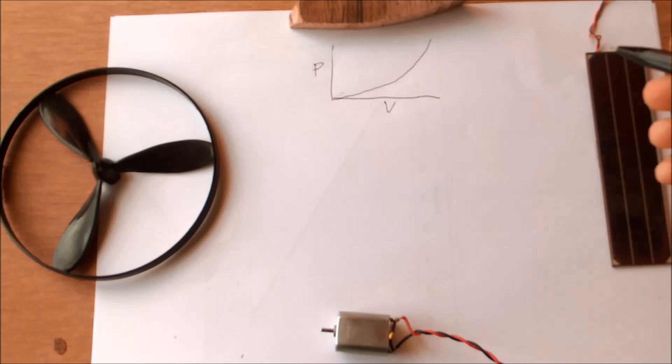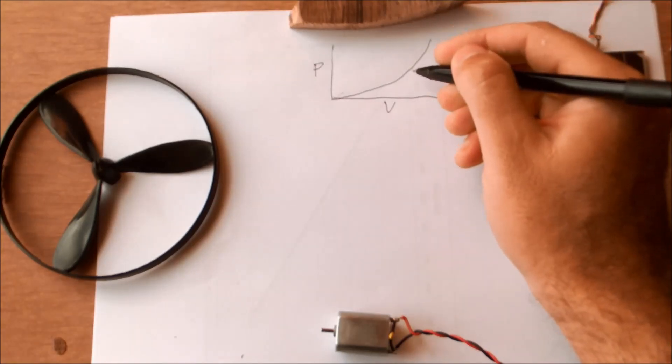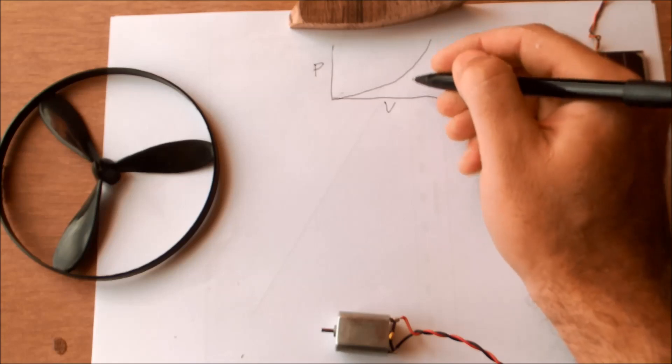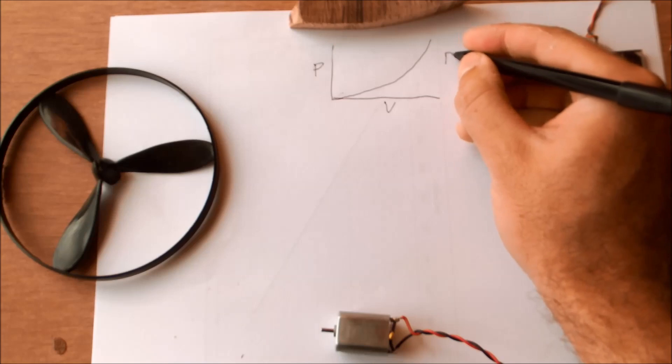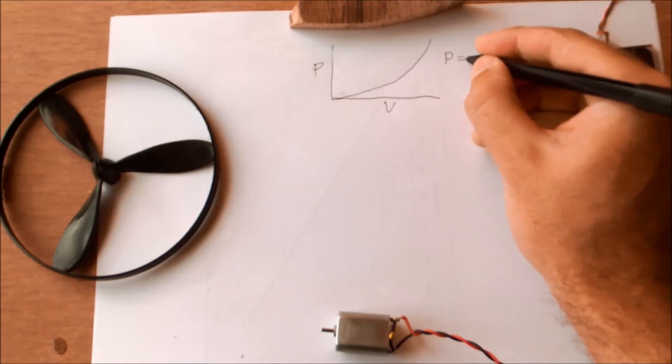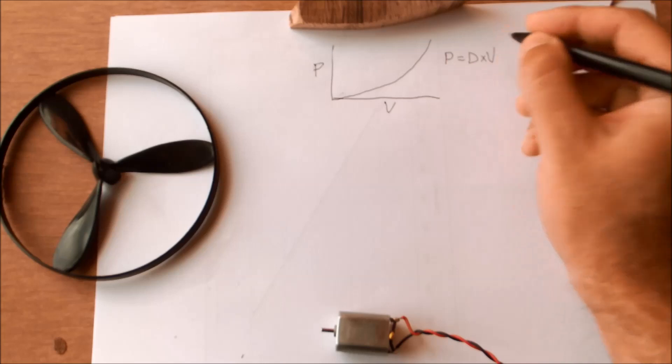For a certain load on the hull it would have a unique drag value at each velocity so you can calculate the power at each velocity as the drag force multiplied by the velocity.